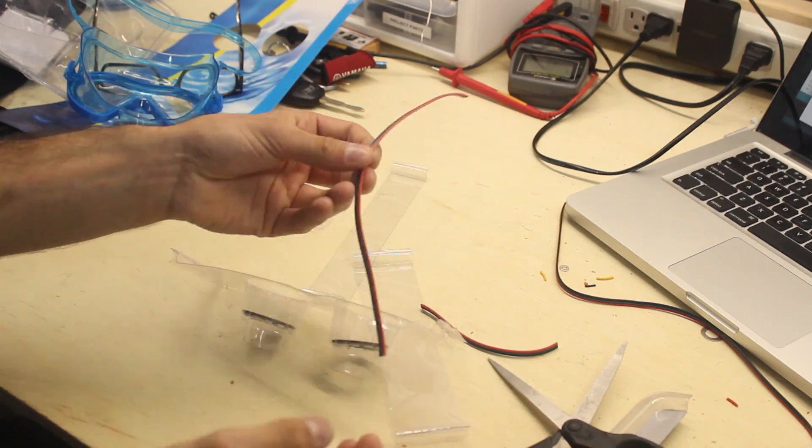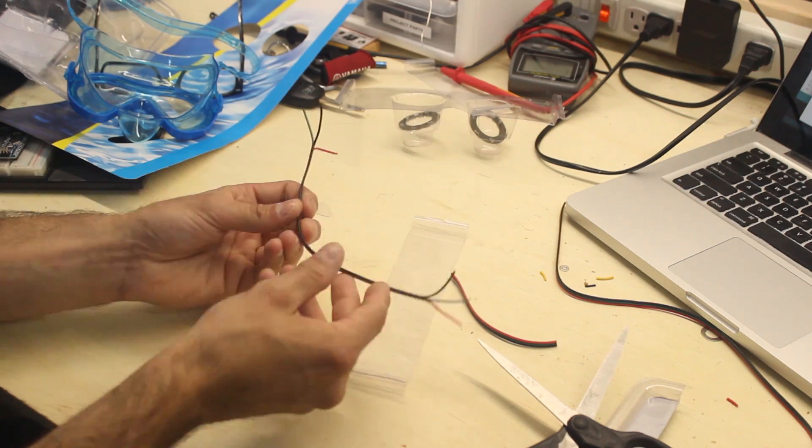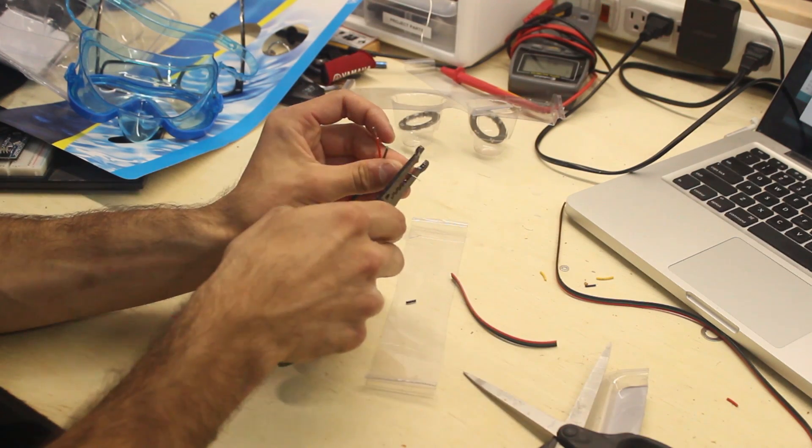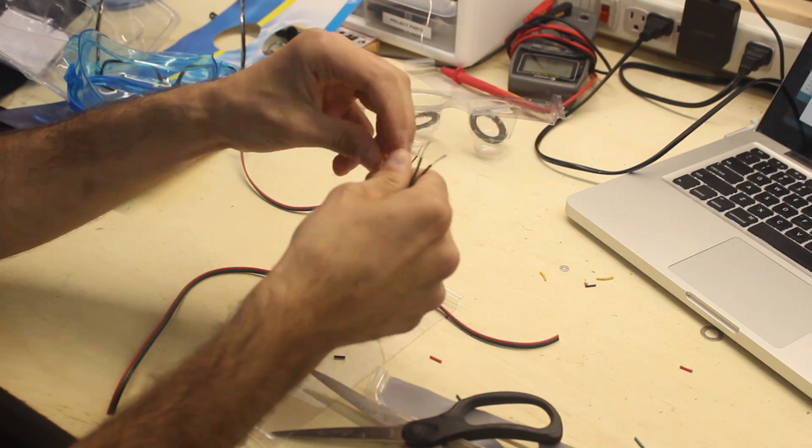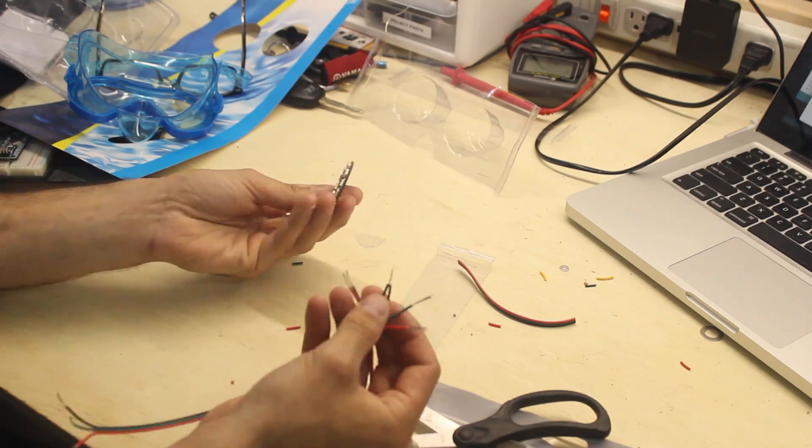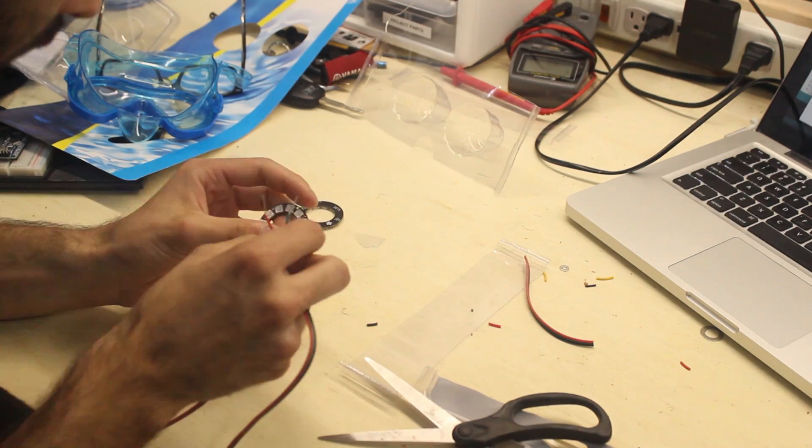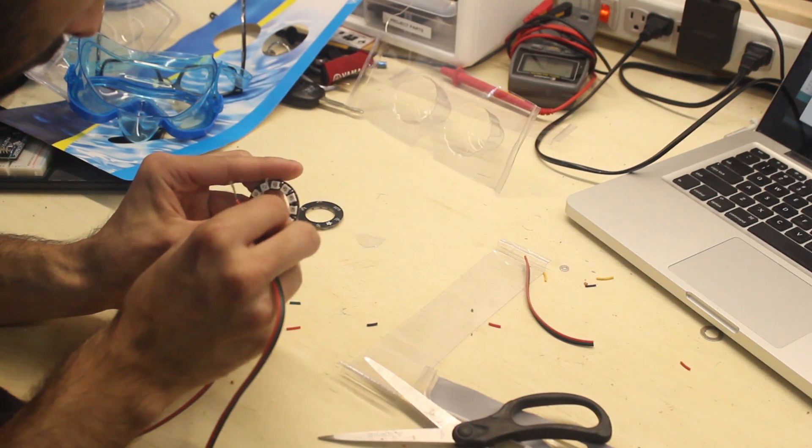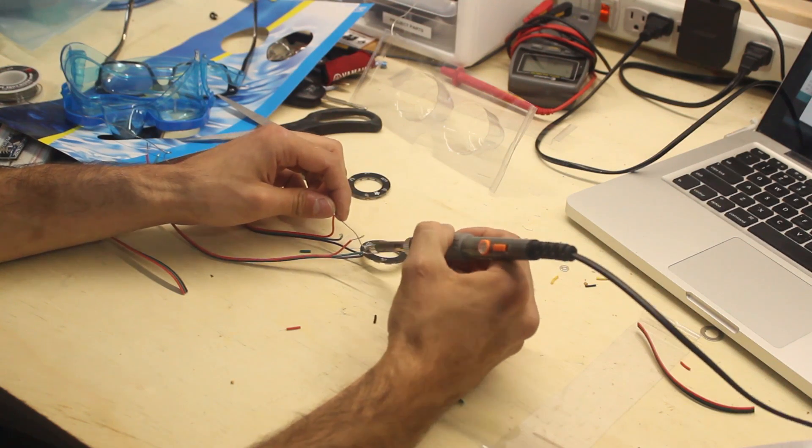We'll need three connections between our microcontroller and the first NeoPixel ring. These will consist of 5 volts, ground, and data in, labeled on the backside of the NeoPixel PCB. Due to space limitations, it's best to bring in the wires from the front and solder from the backside.